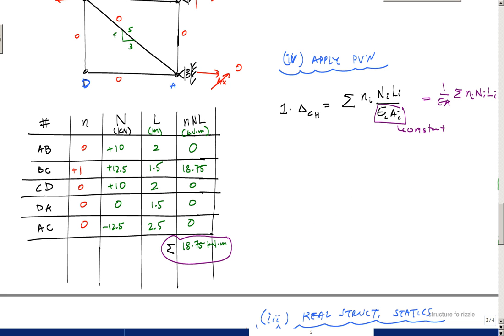So what that means is, 1 times delta_CH is equal to 1 over 200 kilonewtons per millimeter squared. That's kilonewton per millimeter squared, which is equal to 1 GPa. Then here the area I believe was 500 millimeters squared times this summation, which is 18.75 kilonewton meters.